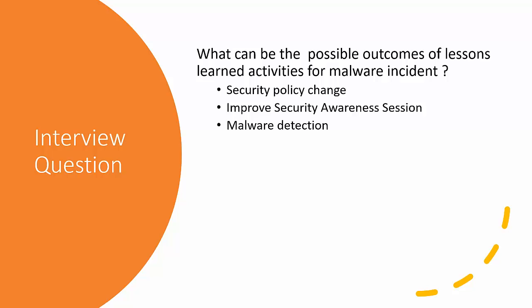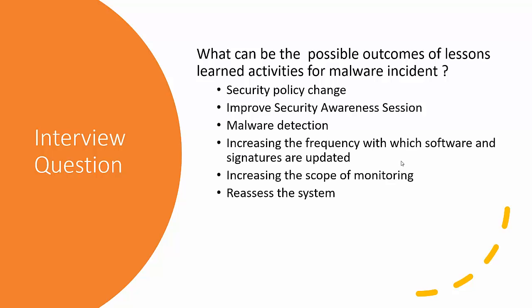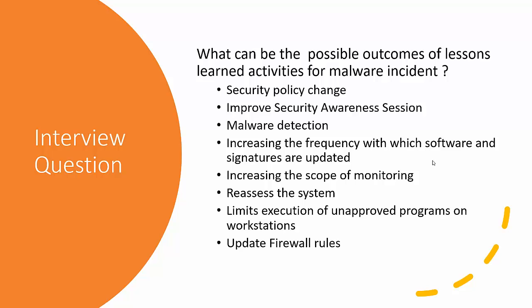Other lessons-learned outcomes include: improving security awareness sessions to clarify what is authorized and what is not; installing more advanced malware detection tools; increasing the frequency of software and signature updates; increasing the scope of monitoring — for example, expanding from three systems to seven. Also, reassess systems for validation, limit execution of unapproved programs, and most importantly, update firewall rules based on the nature and vector of the identified attack — such as blocking specific IPs or defining new signatures.